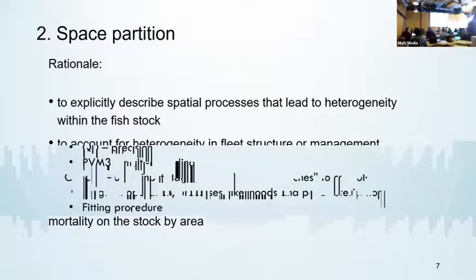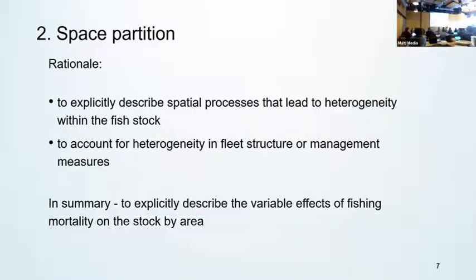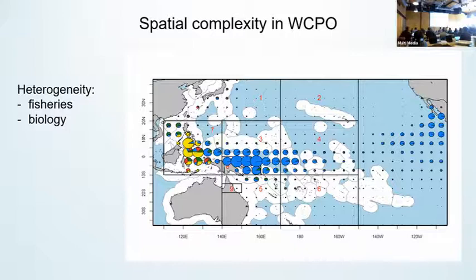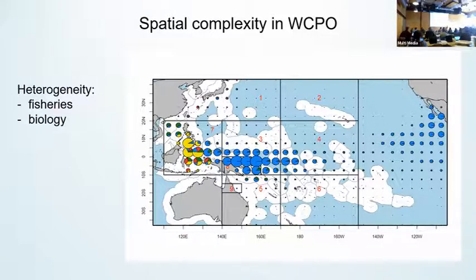One can expect that there will be a lot of spatial heterogeneity for species such as the highly migratory tuna in the Pacific Ocean. This is an example of the complex spatial distribution of the various fisheries within the WCPO, in this case for yellowfin, with the Indonesian and Philippine small-scale fisheries in yellow being primarily to the central and eastern parts, and the purse seine fisheries in the central and western parts of the region. The nine regions shown here are those used for partitioning the models for yellowfin and big eye in the WCPO.